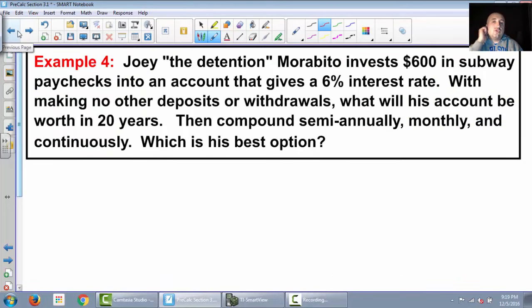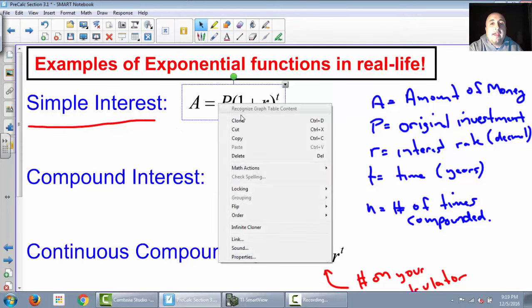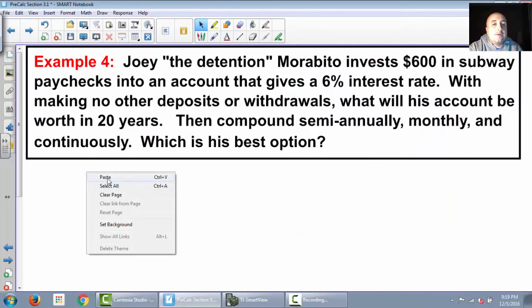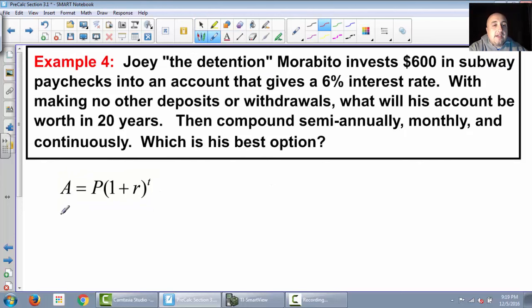Alright, so we are going to now do an example. We're going to start this one, then we'll finish up the rest in class. This is example four. It says, Joey the detention Morabito invests $600 in Subway paychecks into an account that gives a 6% interest rate. With making no other deposits or withdrawals, what will his account be worth in 20 years? So when there's no compounding, when it's straight, just wants to know how much is in the account, we are going to use simple interest. So we're going to use this formula right here. Let's fill in everything that we know. We're trying to figure out how much money he has. So A is equal to P. How much did he originally invest? $600.